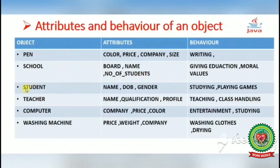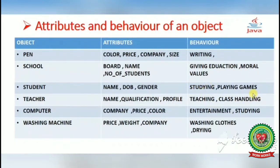The next object is a student. A student has attributes: name, date of birth, gender, mother's name, father's name, and the class they are studying in. The behavior of a student includes studying, playing games, and other activities.